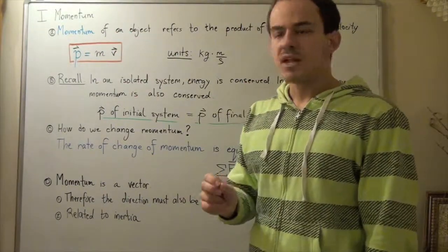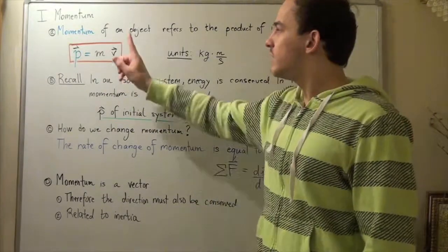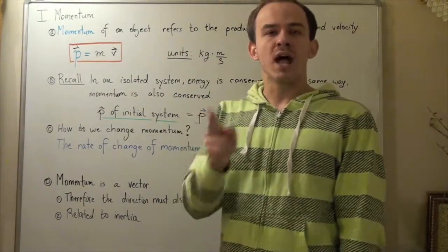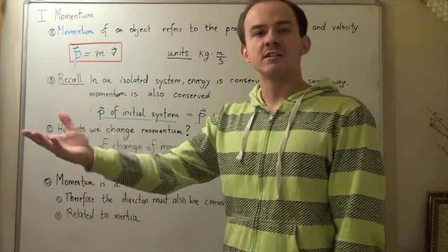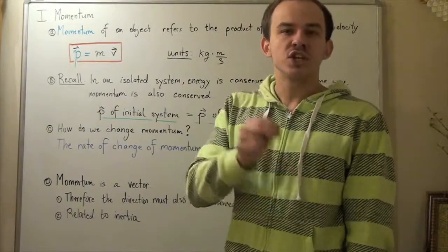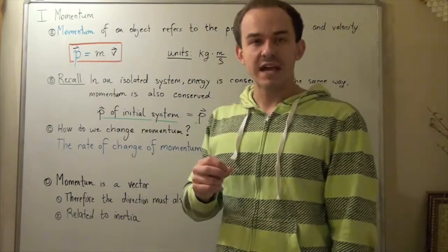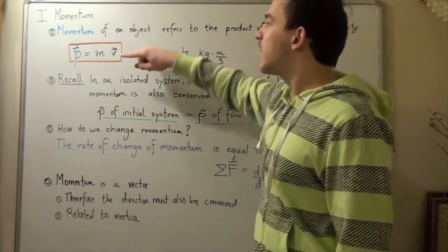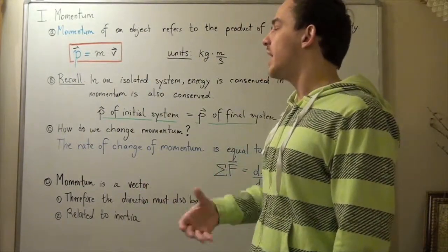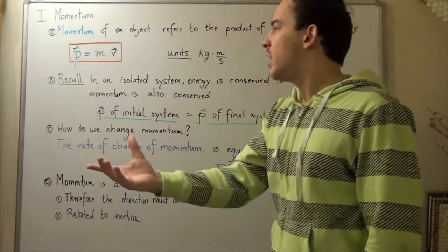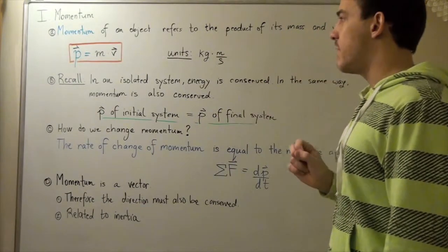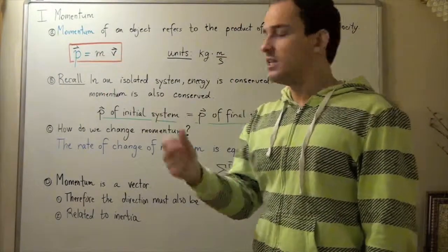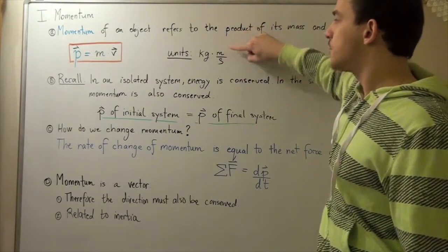Notice that mass is a scalar, which means it only has magnitude, while velocity has both magnitude and direction, and therefore it's a vector. Whenever we multiply a scalar by a vector, we produce another vector. So momentum must have both direction and magnitude — momentum is in fact a vector. The direction our momentum vector points is the same as the direction of our velocity, and the units of momentum are kilograms multiplied by meters per second, because mass is given in kilograms and velocity in meters per second.